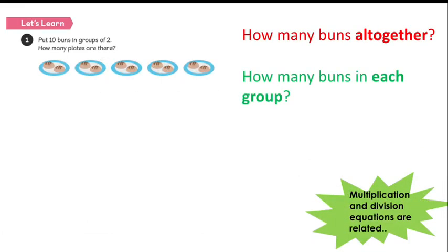First, we need to see how many buns we have altogether. Altogether, there are 10 buns. And now we need to think about how many buns are in each group or on each plate. So we have 2 buns in each group and we have 5 groups.